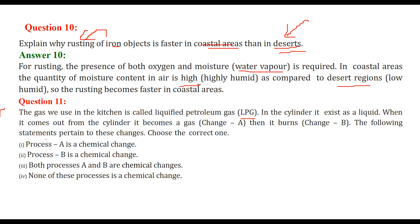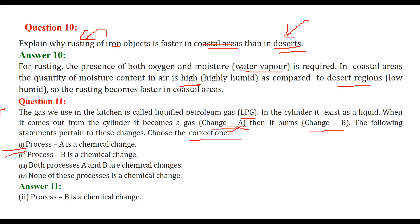The gas we use in the kitchen is LPG - liquefied petroleum gas. In the cylinder it exists as a liquid; when it comes out of the cylinder it becomes a gas - that is change A. It then burns - that is change B. Process A is not a chemical change because the liquefied form is just converting to gas - you can always convert gas back to liquid, so it is a physical change. Process B is a chemical change because when it burns it is actually changing its form irreversibly.